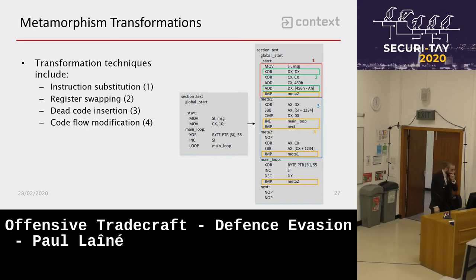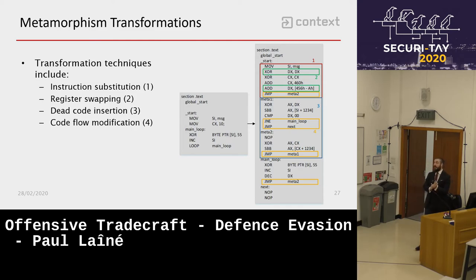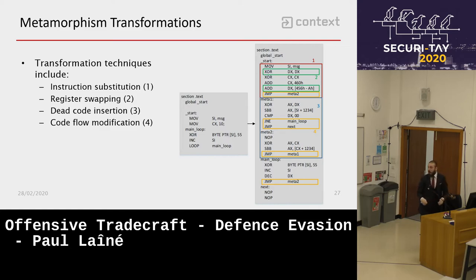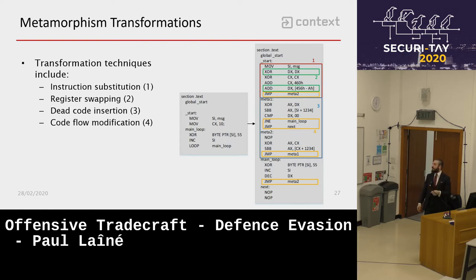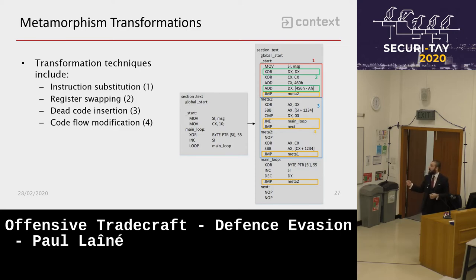There are four main metamorphic transformation techniques: instruction substitution, register swapping, dead code insertion, and code flow modification. For example, instead of moving the string size directly into the CX register, you use ADD operations to achieve the same result. Instead of using SI and CX registers, you use DX. Dead subroutines like 'meta_one' and 'meta_two' are added that do nothing, but the execution flow jumps through them. The result looks completely different from a static analysis perspective, with a totally different signature, yet executes identically.